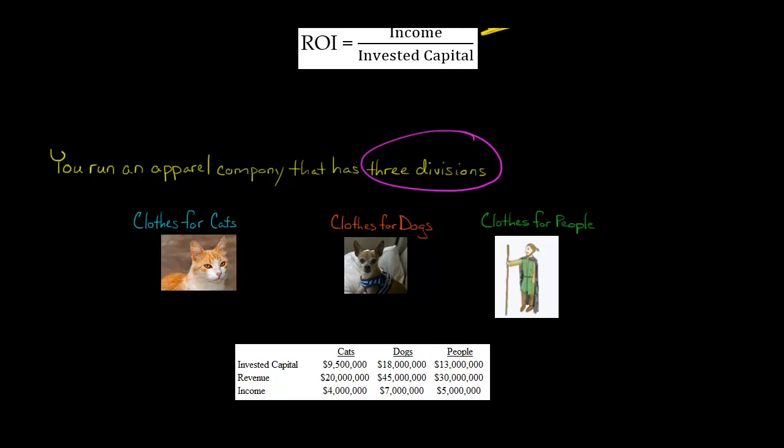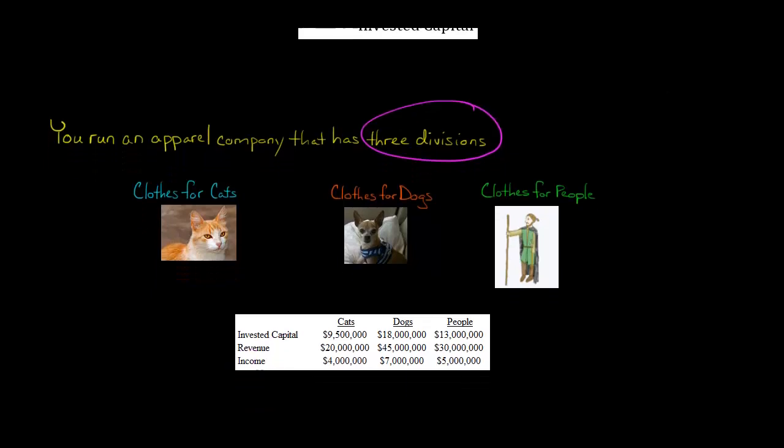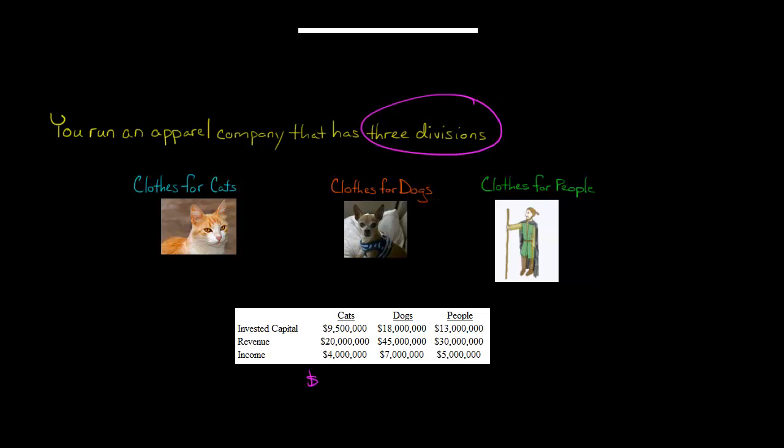So what we want to do to calculate the ROI for each of these divisions is we're going to take the income and divide it by the invested capital. So for the cat division, we would take $4 million and divide it by $9.5 million. So $4 million divided by $9.5 million. For the dog division, it would be $7 million divided by $18 million. And for the people division, it would be $5 million divided by $13 million.